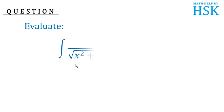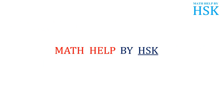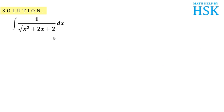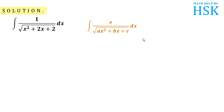The question is: evaluate the integral of 1 upon under root of x squared plus 2x plus 2 with respect to x. To solve this, I observe that this integral is in the form of a constant upon under root of ax squared plus bx plus c dx — that is, it is in the form of constant upon under root of a quadratic.